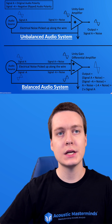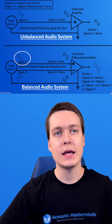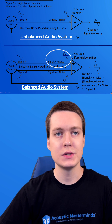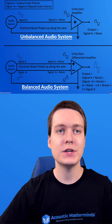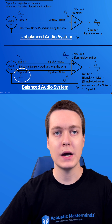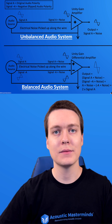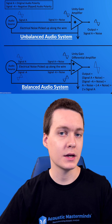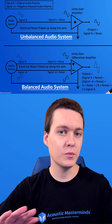In the balanced audio system, we have the audio source again, with signal A being our primary in and out signal, picking up noise. As well as our 180-degree phase flipped signal minus A, which also picks up EMF signals and different noise. It compares the two — the noise is the same, being picked up on both.